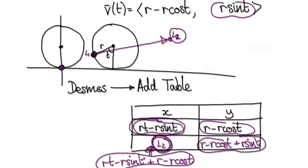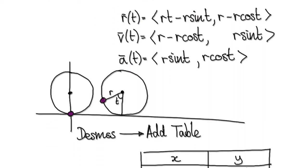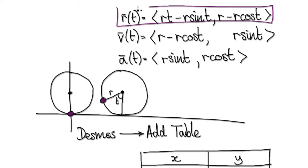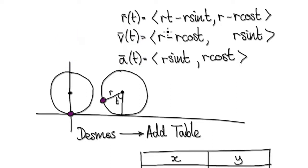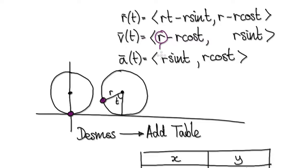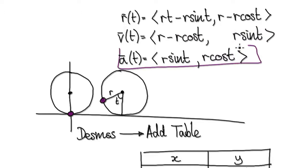Now we need to add our acceleration vector. Given a position vector, if you differentiate it once you get the velocity vector — written as R′(t) — and if you differentiate again you get the acceleration vector, written as R″(t). From our velocity vector, differentiating with respect to t: differentiating R gives nothing, differentiating the next term gives this, and the next gives this — so we've got our acceleration vector.